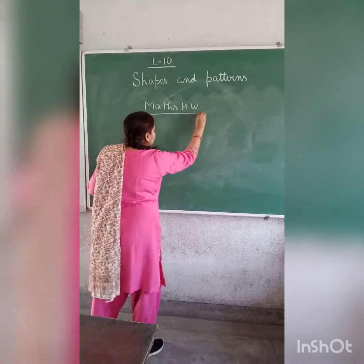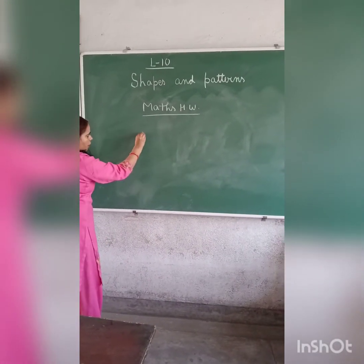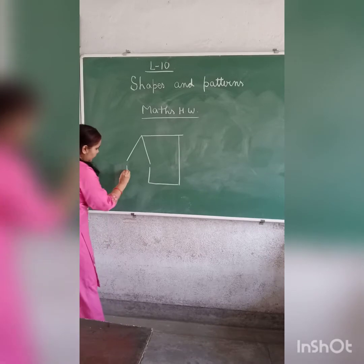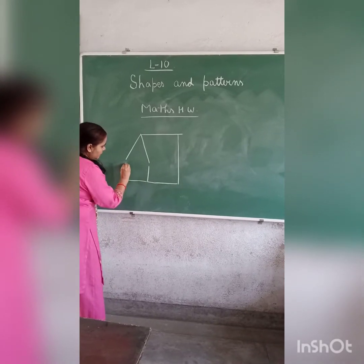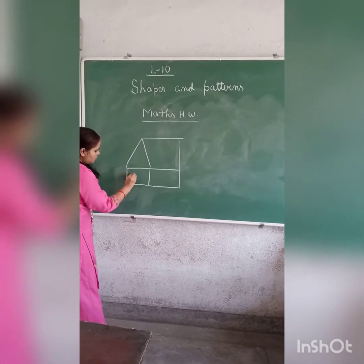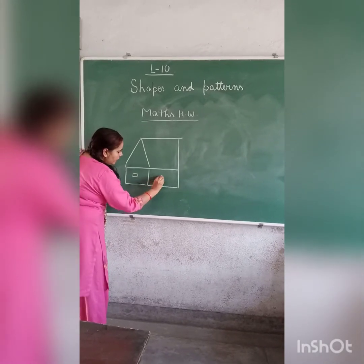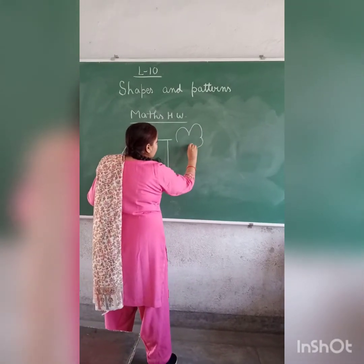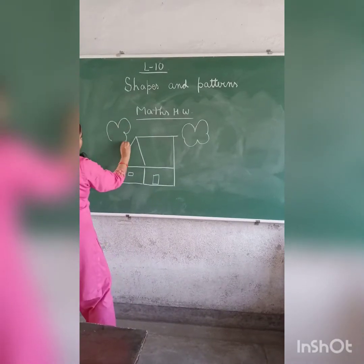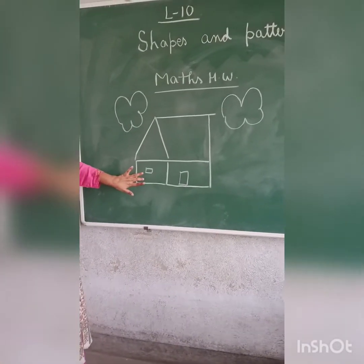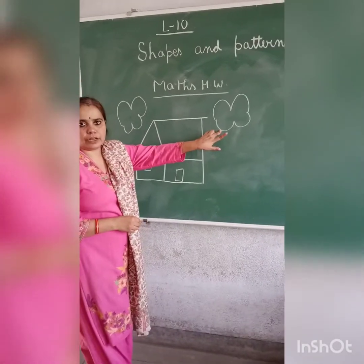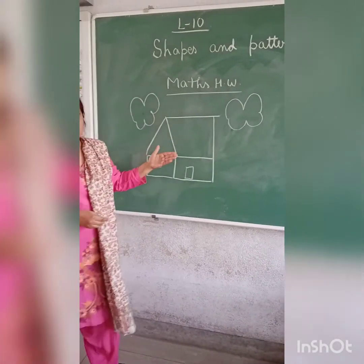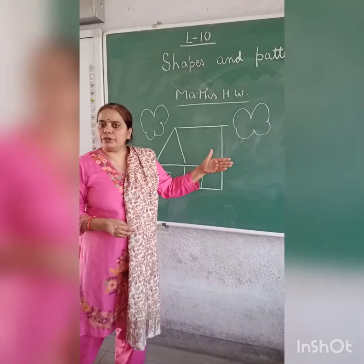You all have to draw a house using straight lines. Using straight lines, you all have to make a house. And using curved lines, you all have to draw a cloud. Using curved lines, draw clouds. You can draw as many clouds as you want. Everything you have to do in your maths homework.